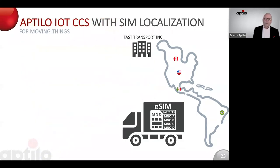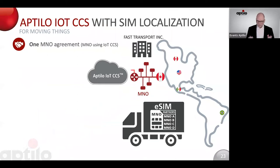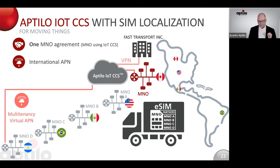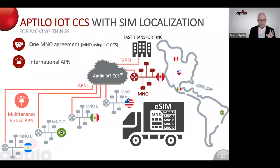Let's now look at the same solution enabled by Aptilo IoT CCS. You still have one MNO agreement, like this, over the Aptilo IoT CCS. But then we can provide international APMs, which is a huge benefit to this service — or the mobile operator can offer this. We only offer the tools to make it happen.